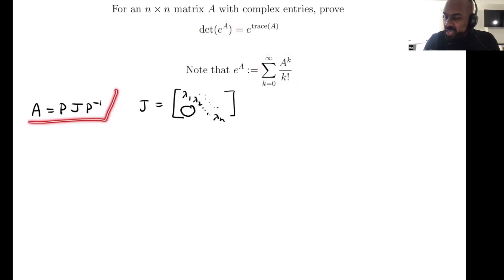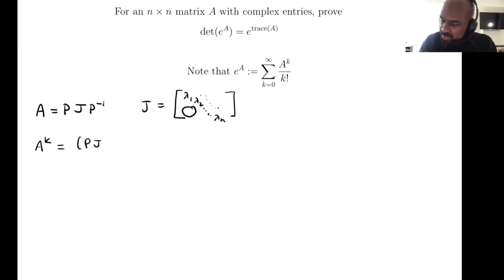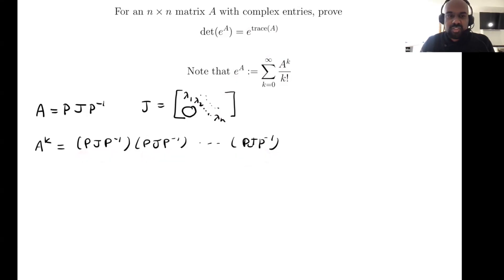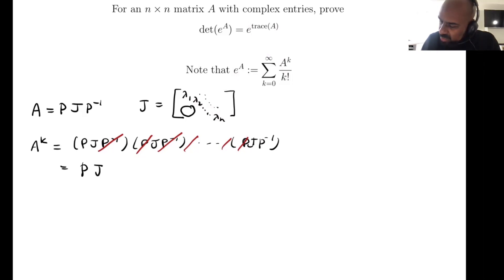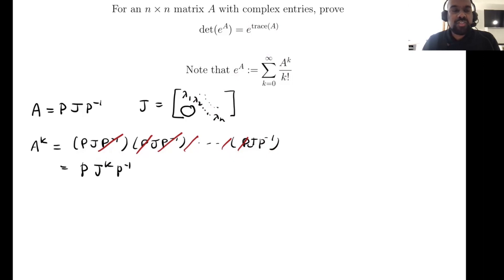Before looking at the determinant of the entire exponential, let's look at the determinant of powers of A because they show up in this summation. A to the K equals P·J·P⁻¹ times P·J·P⁻¹... K times. Notably, P⁻¹ and P multiply together to give the identity matrix, and this cascades, so what you're left with is P times J^K times P⁻¹. This holds for any non-negative integer K.